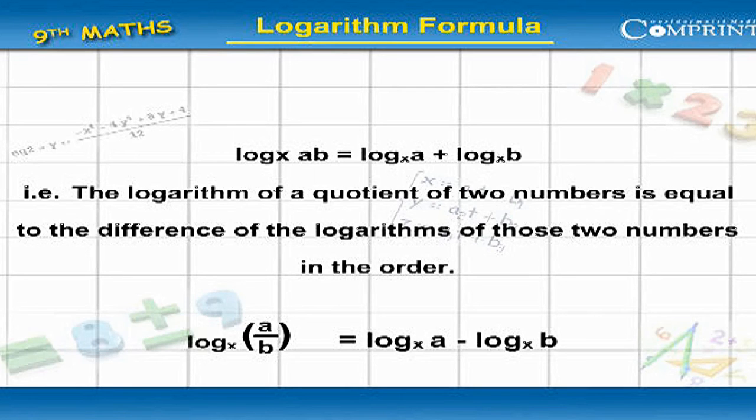The logarithm of a quotient of two numbers is equal to the difference of the logarithms of those numbers in the order. That is, log a by b base x equals log a base x minus log b base x.